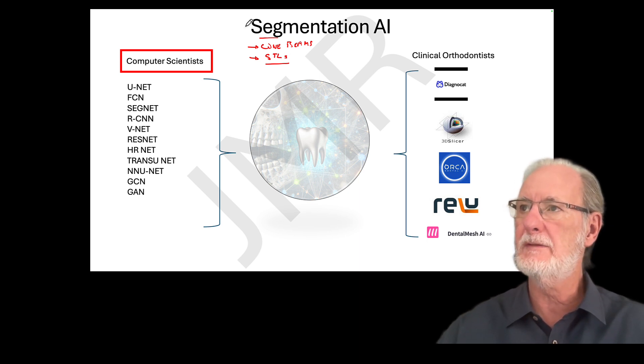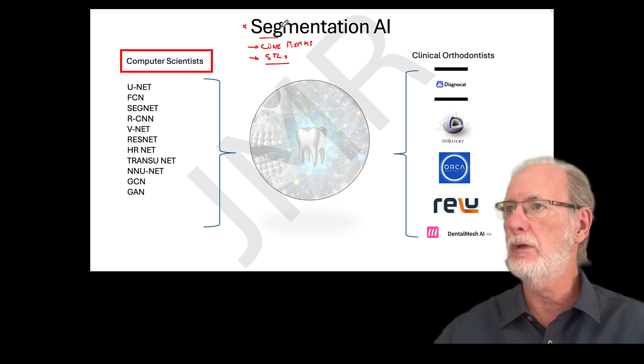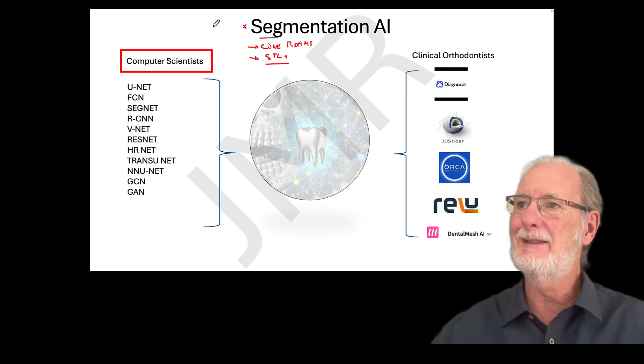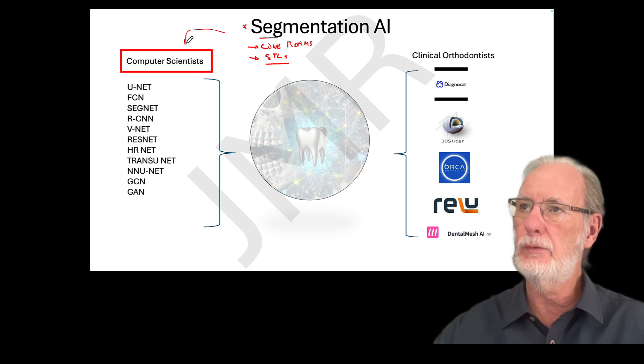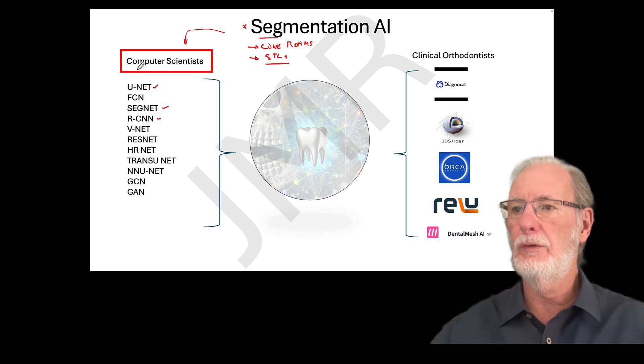The problem we're having when I talk about segmentation, people tell me they don't quite really understand what I'm talking about. But really, this is a computer scientist problem. In the sense that you see those nets, FCN, SegNet, RCNN, it's all networks. You've got all these ResNets, CNN and the GANs, which is generative adversarial networks.